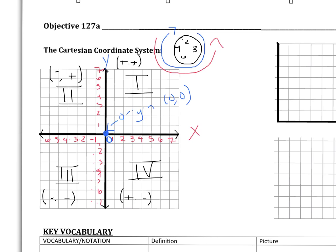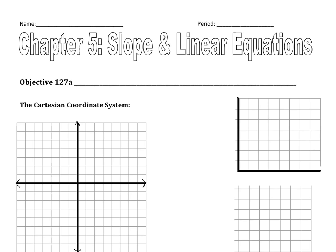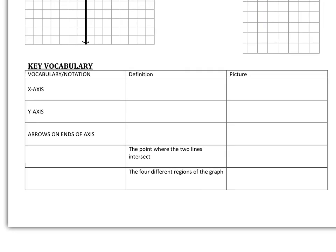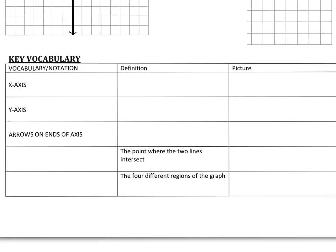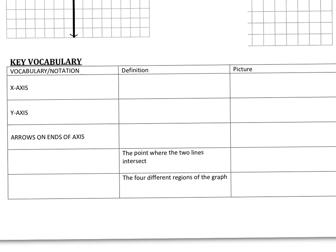Next, I want to fill out vocabulary at the bottom of our page. We've already talked about what these words mean, but this is an opportunity to write down formal definitions. First, the x-axis — that's the horizontal axis, the one that runs from left to right.